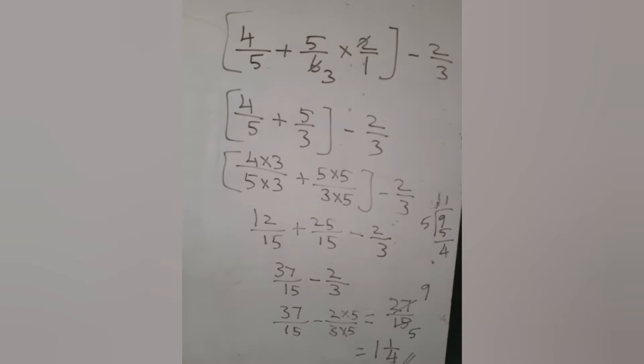We can write in multiplication symbol. We can write the reciprocal of 1/2, which is 2/1. Now again we can take the LCM of 5 and 3, which is 15. So 4/5 is multiply by 3, and 5/3 is multiply by 5. So we get 12/15 plus 25/15 minus 2/3. 12/15 plus 25/15 is equal to 37/15 minus 2/5. Here we can take the LCM of 15 and 3, which is 15. So 37 minus 10 equals 27/15.